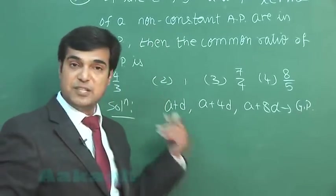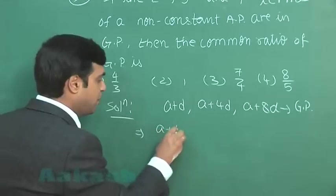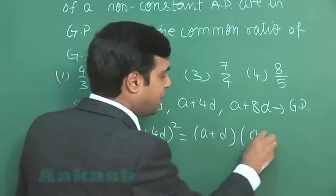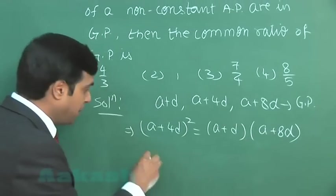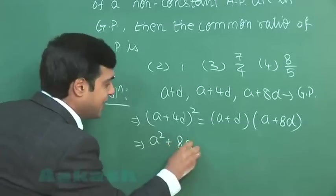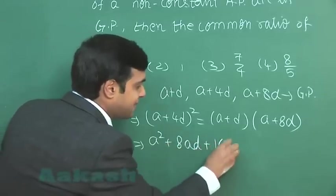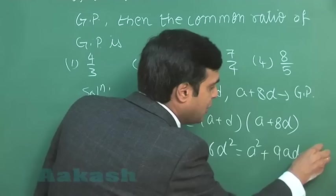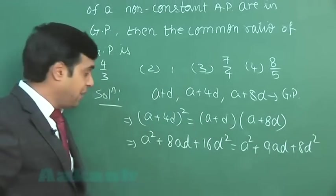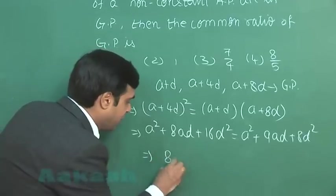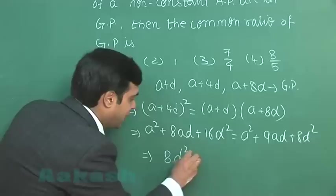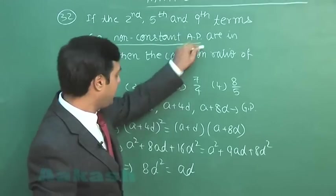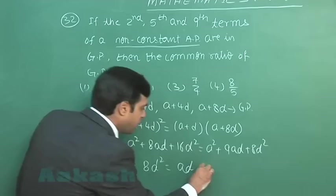That is b squared equals ac. This gives me (a plus 4d) whole squared equals (a plus d) multiplied with (a plus 8d). Simplifying, we have a squared plus 8ad plus 16d squared equals a squared plus 9ad plus 8d squared. A squared is cancelled. We are left with 8d squared equals ad.